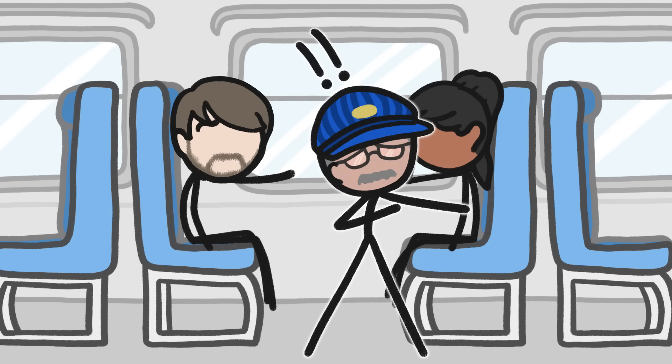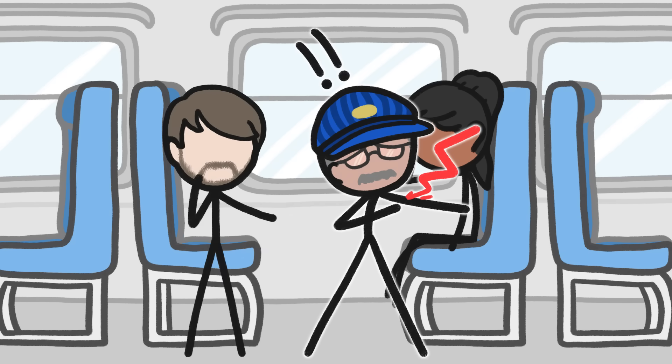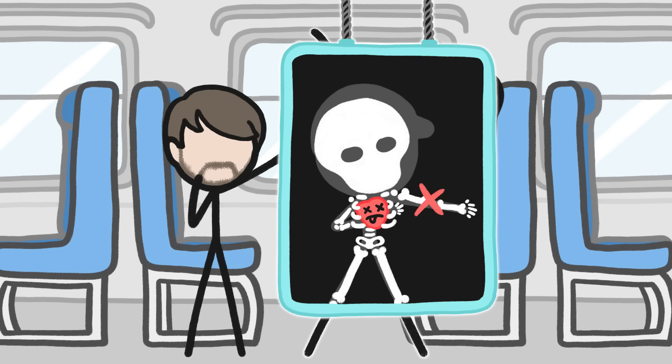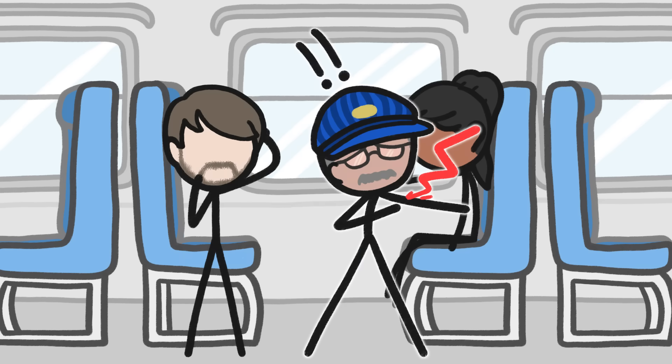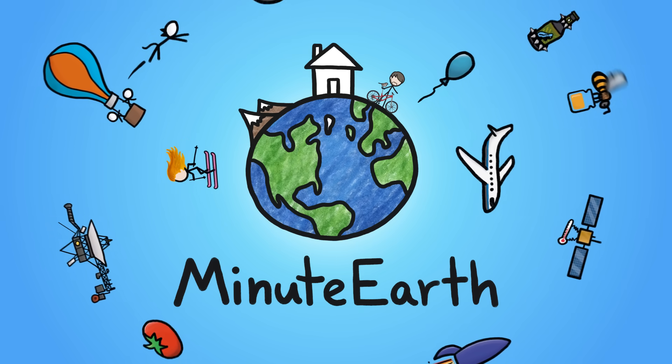When someone has a heart attack, they often clutch their left arm in pain. But the heart is in the chest, not the arm, so what's up? I'm Cameron, and this is MinuteEarth.